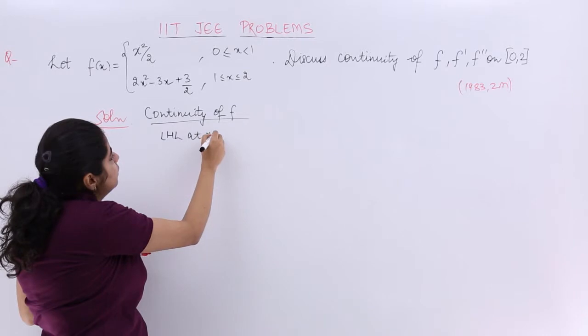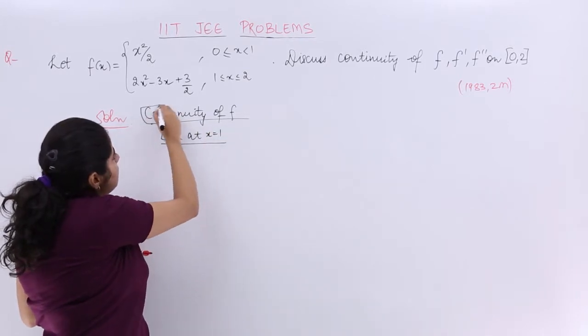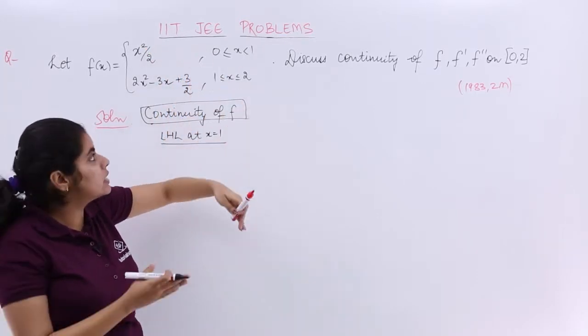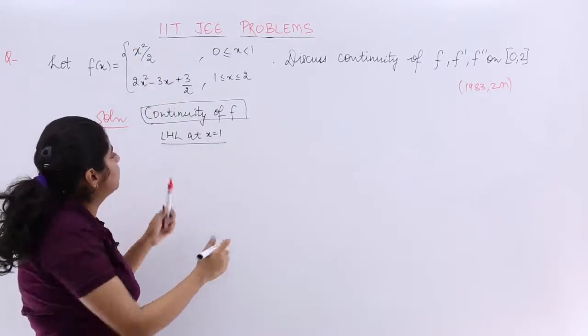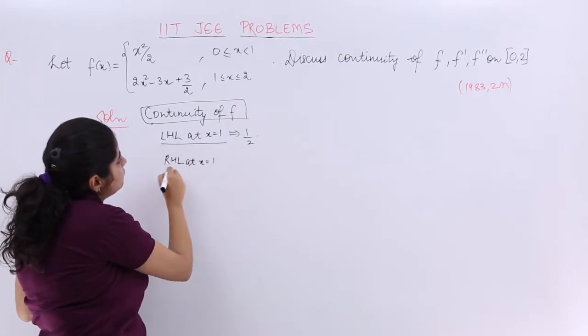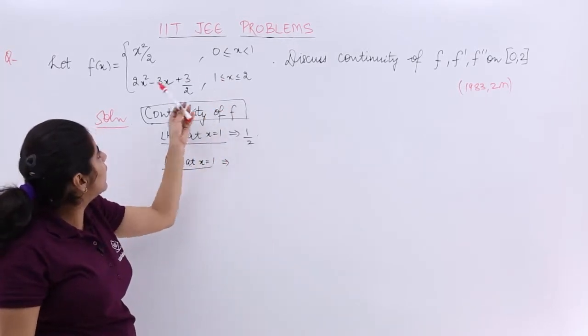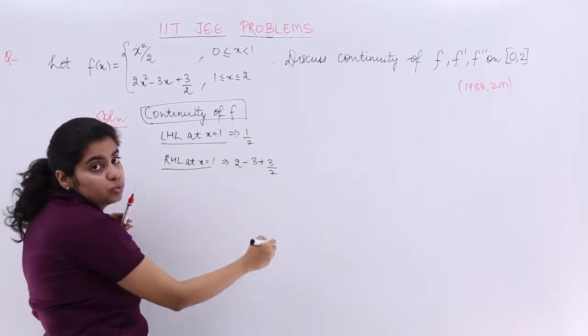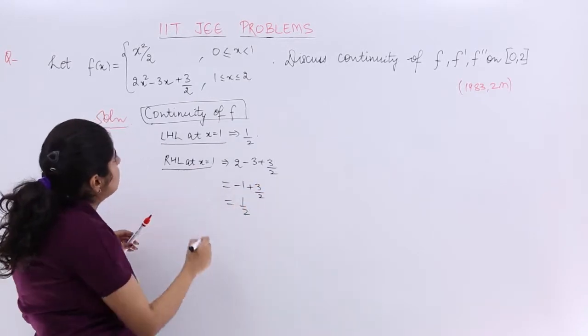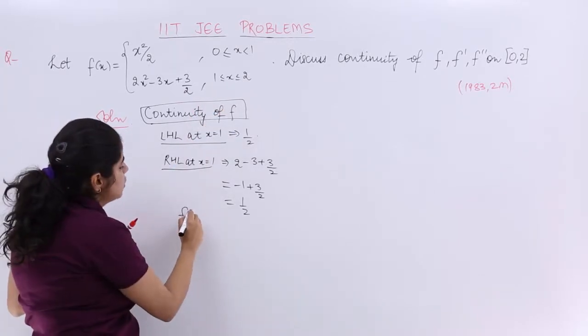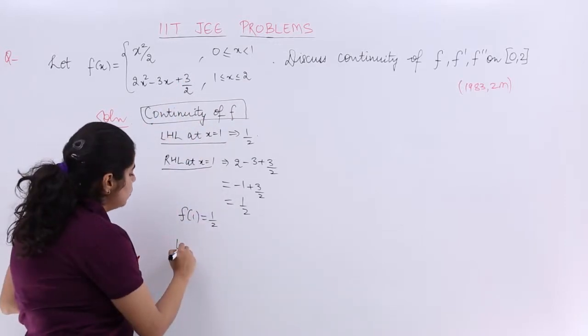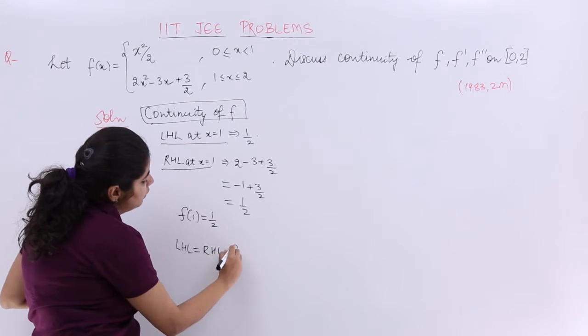So continuity of f should be there. What about at x equals 1? Let's see LHL at x equals 1. Here if I have to check directly because it is bifurcated function, directly put 1. So LHL gives me 1/2. What about RHL at x equals 1? RHL at x equals 1 directly put 1. So it is 2 - 3 + 3/2, which is -1 + 3/2, which equals 1/2. So that means what? And what about the function value at 1? So f(1) is also 1/2 because 1 is there, you put it here directly you will get 1/2.